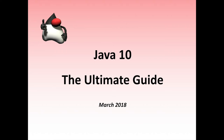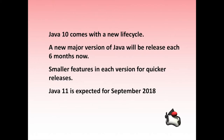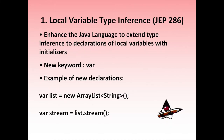Java 10 is out. For the first time since a long time, a new JDK release arrives on time. Java 10 is there, and you are going to discover the 10 new features of JDK 10 each developer should know. This is the ultimate guide of Java 10. Java 10 comes with a new life cycle — a new major version of Java will be released every 6 months, with smaller features in each version for quicker releases. Java 11 is expected for September 2018.